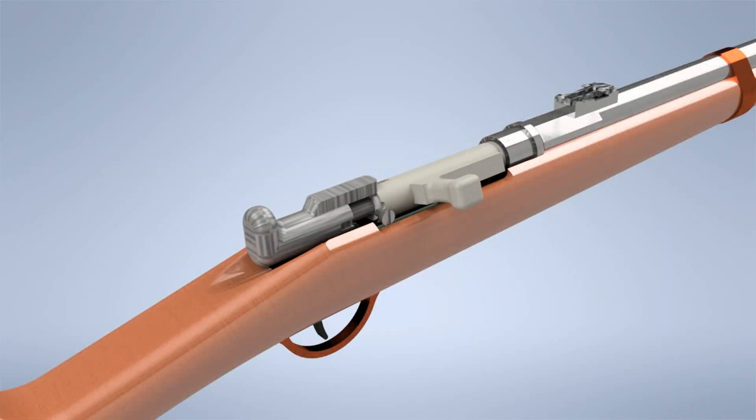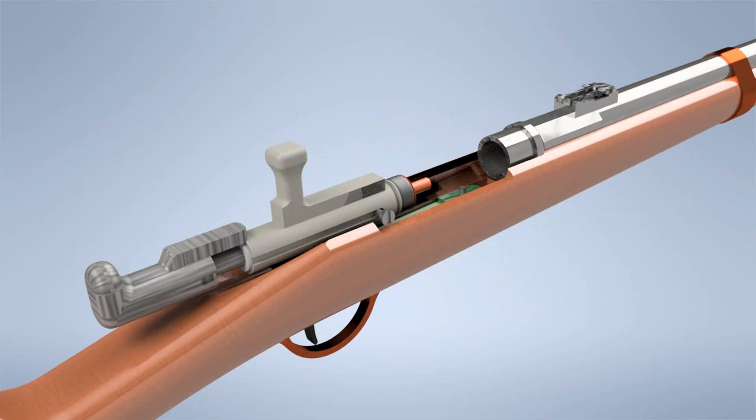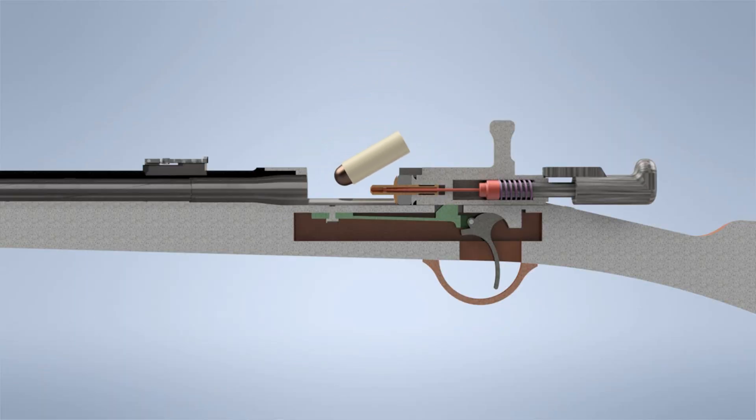Next, lift the bolt handle and pull it back to open the breech. The bolt has grooves that a screw fits into to guide it back. Insert the paper cartridge into the chamber, then push the bolt forward and lock it down to the right.